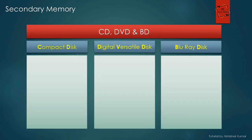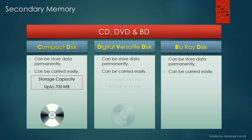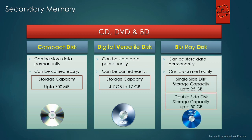Next we have CD, DVD, and BD. CD stands for Compact Disc, DVD stands for Digital Versatile Disc, whereas BD stands for Blu-ray Disc. All three discs store data permanently and are portable so you can carry your data easily, but their storage capacity differs. A CD can store data up to 700 MB, whereas a DVD can store 4.7 GB to 17 GB. A Blu-ray disc comes in two types: single-sided with a storage capacity of 25 GB, and double-sided which stores up to 50 GB.